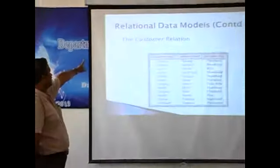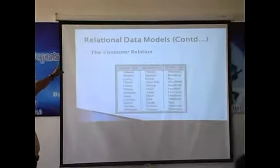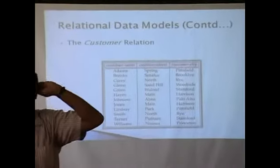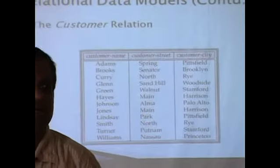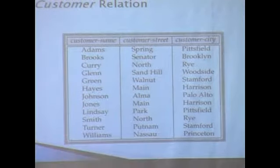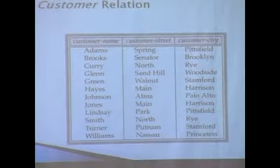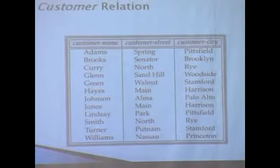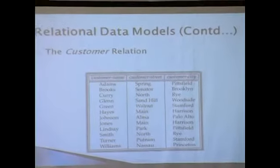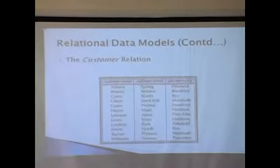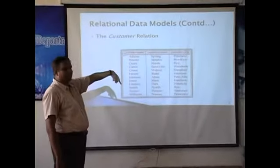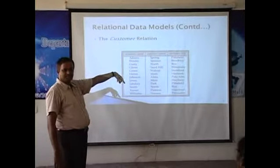Look at this table. Customer is the relation. What is the other name for relation? Association or table. The relation is nothing but the table because I connect two tables. Here you look at customer name, customer street, customer city.